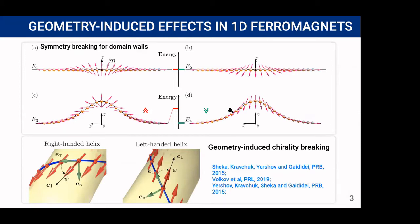Another interesting effect is geometry-induced chirality breaking. We know that in the straight ferromagnetic wire with easy tangential anisotropy in equilibrium state, magnetization is aligned straight along the wire. But if we bend it in the helix, in equilibrium state magnetization is shifted from the tangential direction and the direction of this tilt is different for right-handed helix and left-handed helix. So it depends on the chirality of the helix.